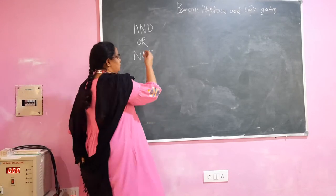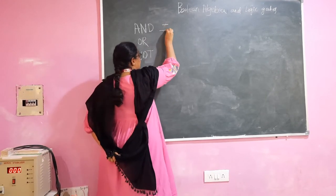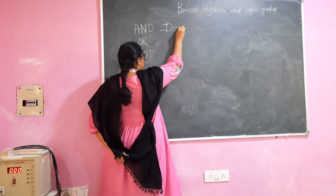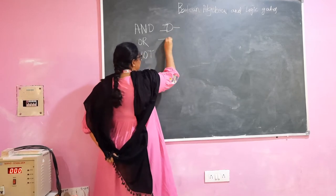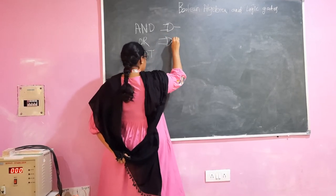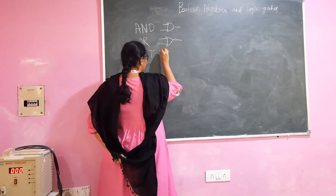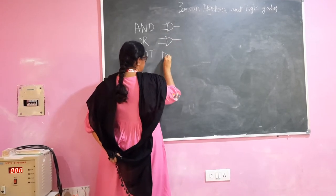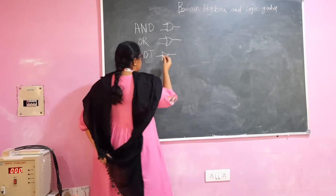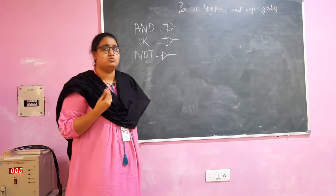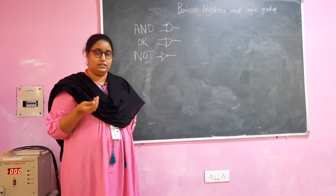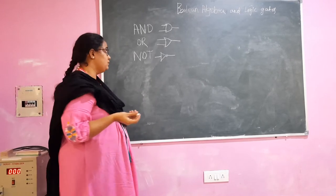This AND gate has two inputs and it is represented like this. OR gate is represented as such and the NOT gate is represented as such. These are the basic gates which we will use to design any logic circuit.